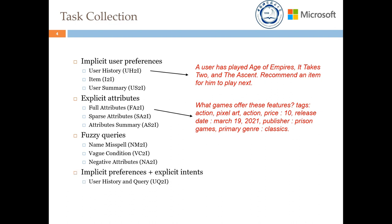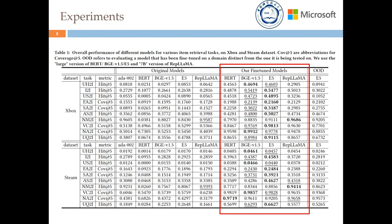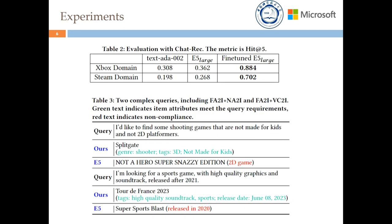The last task handles queries that combine both implicit preferences and explicit intents. Our experiments show that our in-domain fine-tuning is essential for enhancing item retrieval performance. Furthermore, we assess the model's performance in a practical application — a recommender AI agent — and also present some case studies. The results demonstrate that the fine-tuned model can truly embed any text for item retrieval.